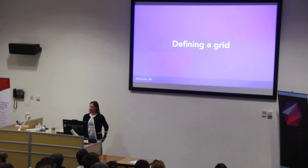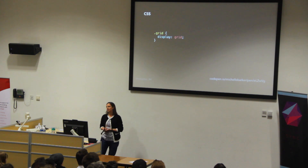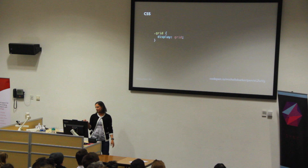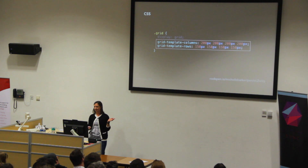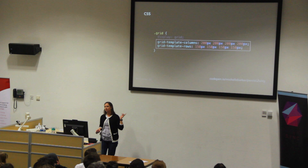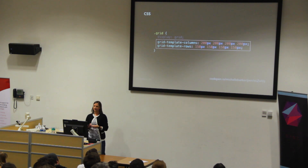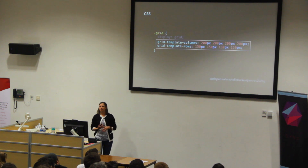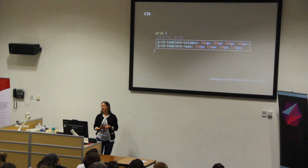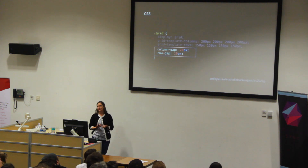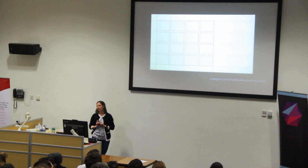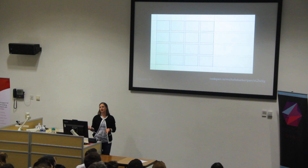Let's define our first grid. We have one element with a class of grid and we set the display property as grid. We can then use grid-template-columns and grid-template-rows to define a four-by-four grid where each column is 200 pixels wide and each row is 150 pixels high. I've included links to relevant CodePen demos in the bottom right corner of some slides — I'll share my slides at the end so you don't need to write those down. We can then use column-gap and row-gap to set a 20-pixel gutter between each of our tracks. Now our grid is defined, but it's not responsive yet because we're using fixed track sizing.